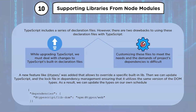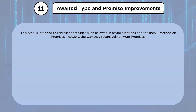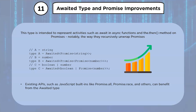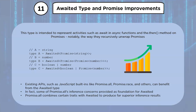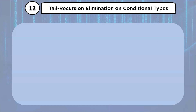The awaited type is a new utility introduced in TypeScript, intended to represent activities such as await in async functions and the then method on promises — notably how they recursively unwrap promises. Existing APIs like Promise.all, Promise.race, and others can benefit from the awaited type. Some of Promise.all's inference concerns provided the foundation for awaited, which combined with certain traits produces far superior inference results.